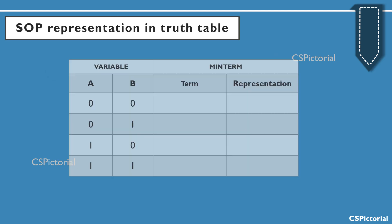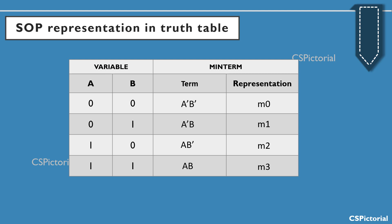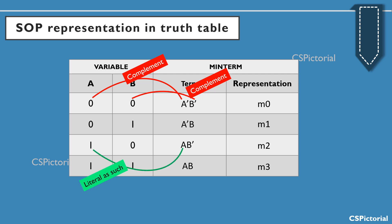Let us consider a truth table with two input variables A and B. The truth table representation for min terms will be M0, M1, M2, M3, etc., depending on the number of input variables. Now to derive the min term, always remember for SOP: if the value of the input variable is 0, the min term will have the complement of the variable or the literal. If the value of the input variable is 1, the min term will have the literal as such. This is how we derive the min terms: Ā·B̄, Ā·B, A·B̄, and A·B.